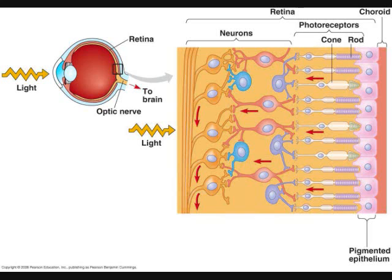Cones are photoreceptors specialized for detecting different colors, that is different wavelengths of light. However, they do not function under low light conditions. Only cones, with their ability to detect different colors and to form sharper images, are found in the fovea, the center of the visual field where the lens focuses light.